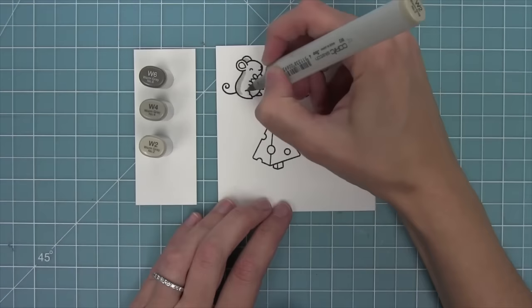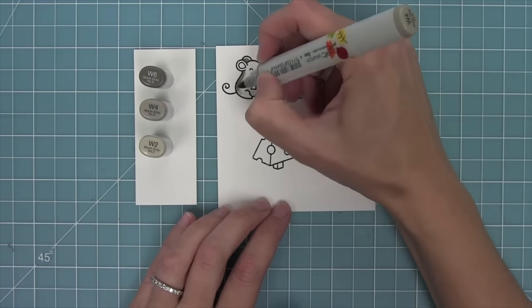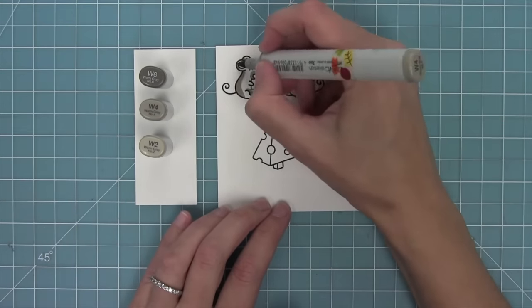So I've gone ahead and stamped out those two cute little mice and then my favorite stamp from this set which is that super funny and cute cheese tree.